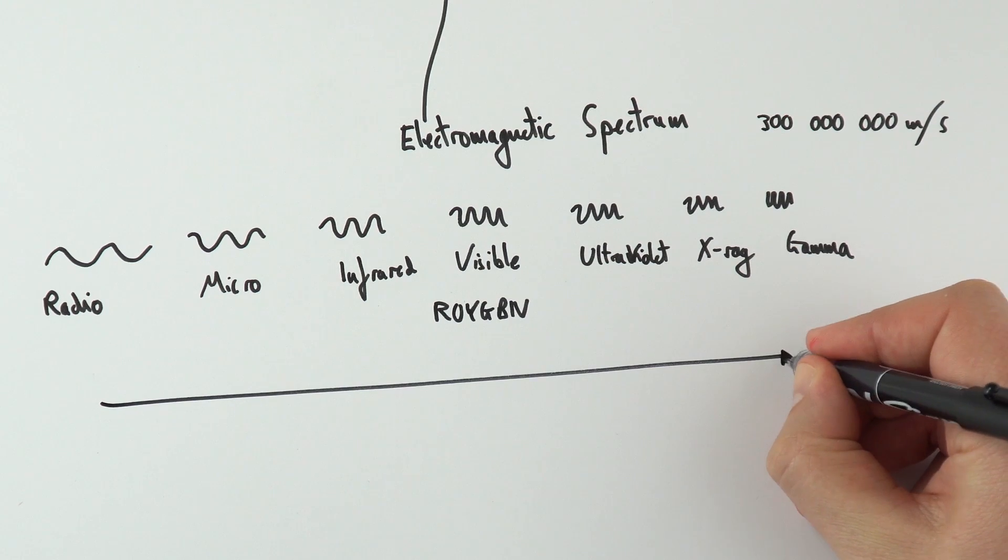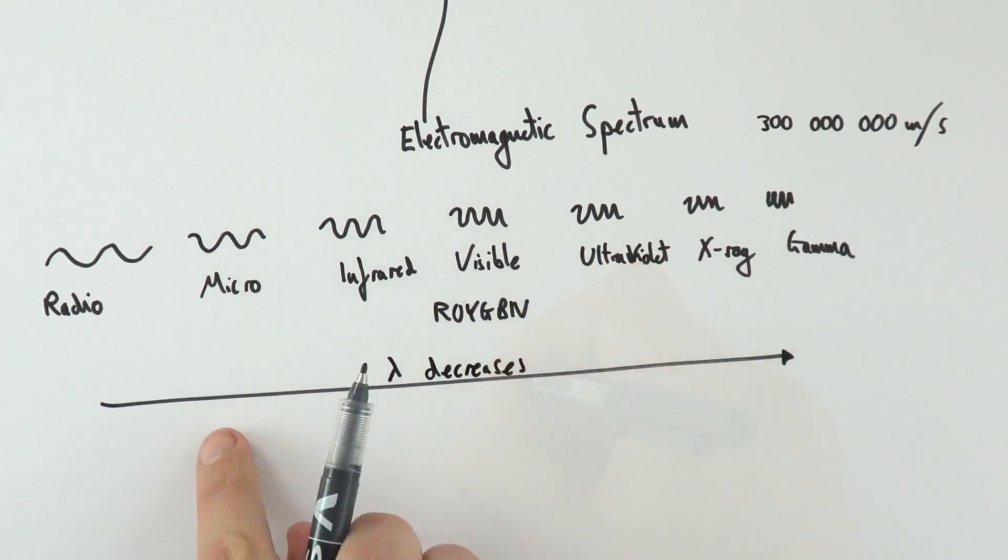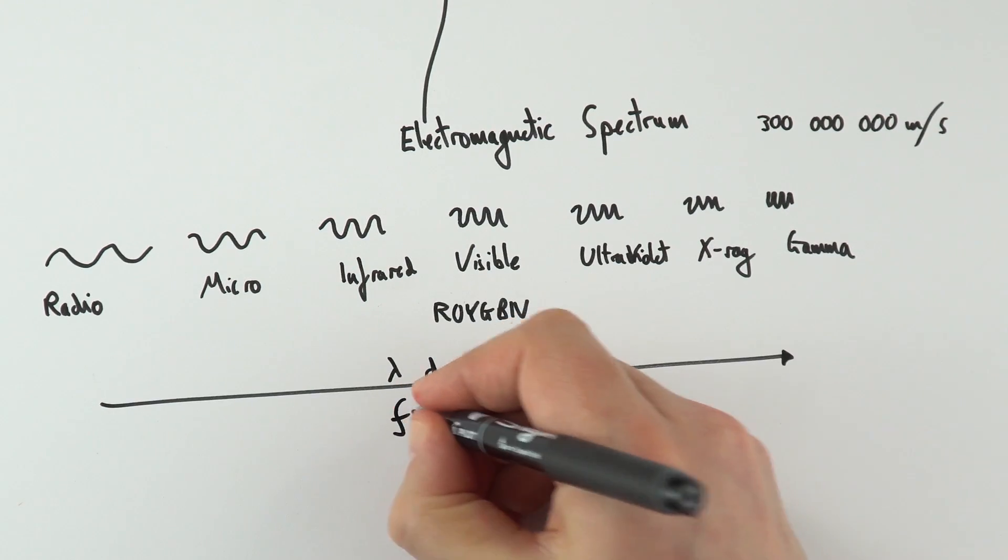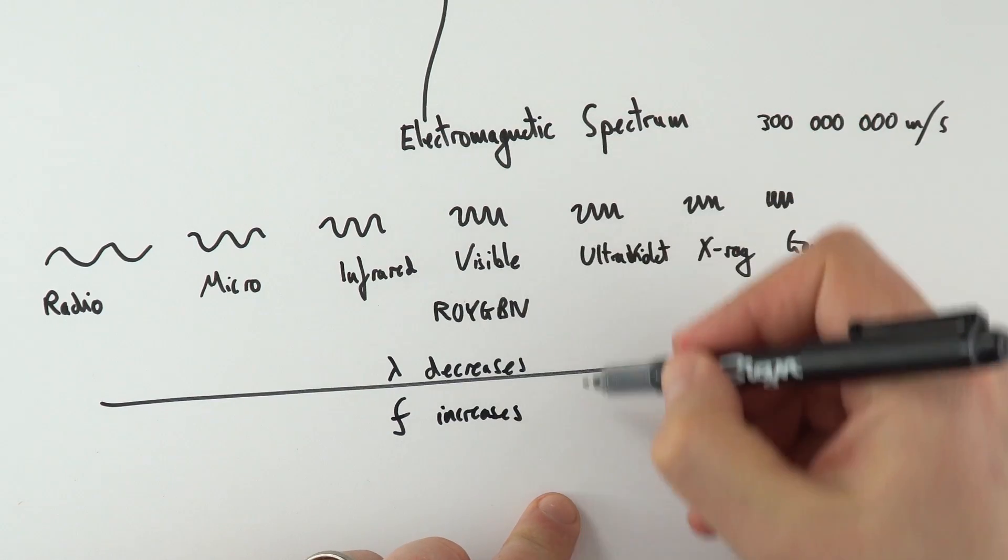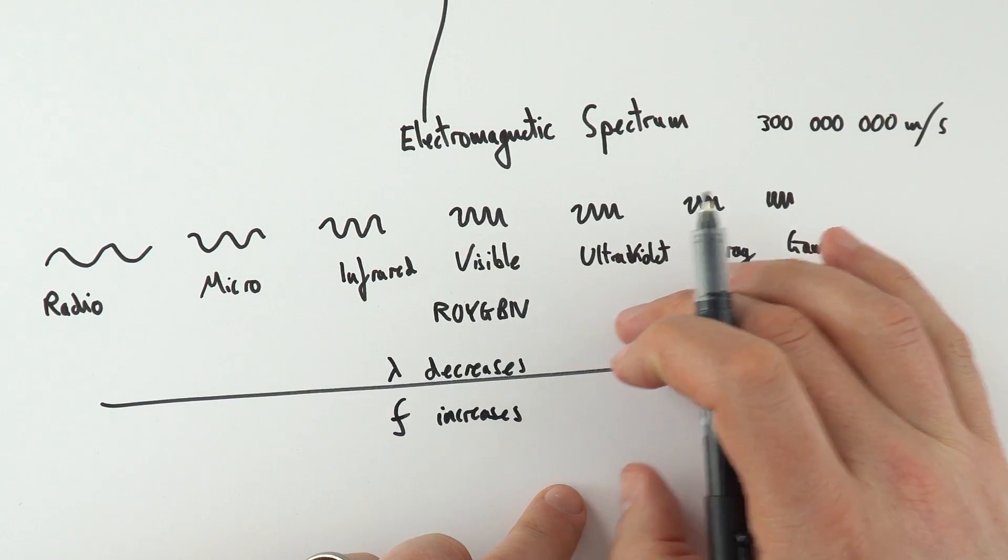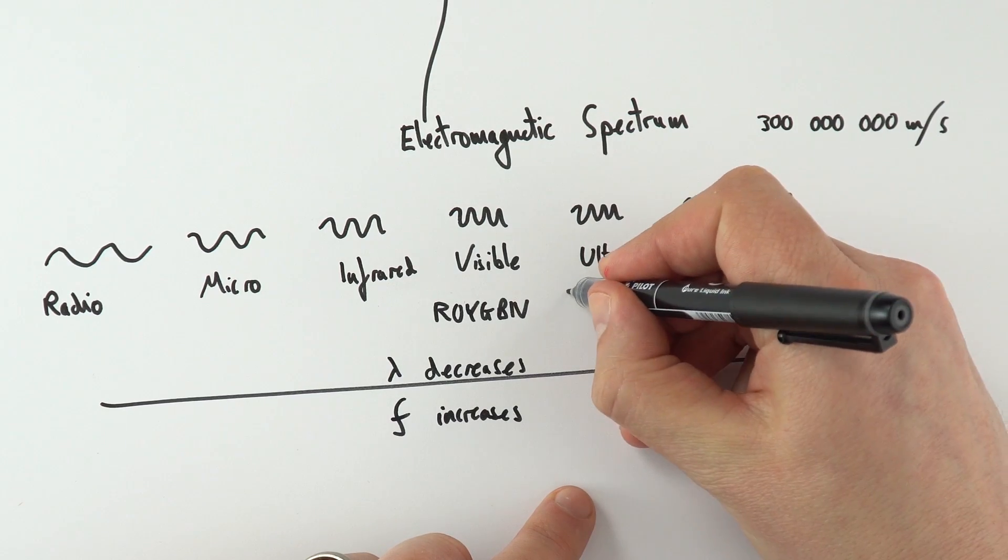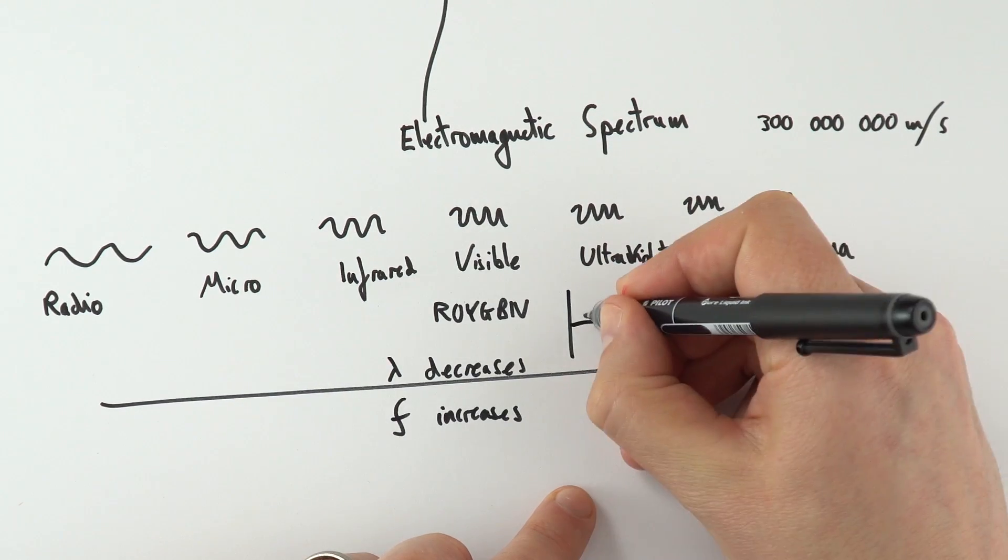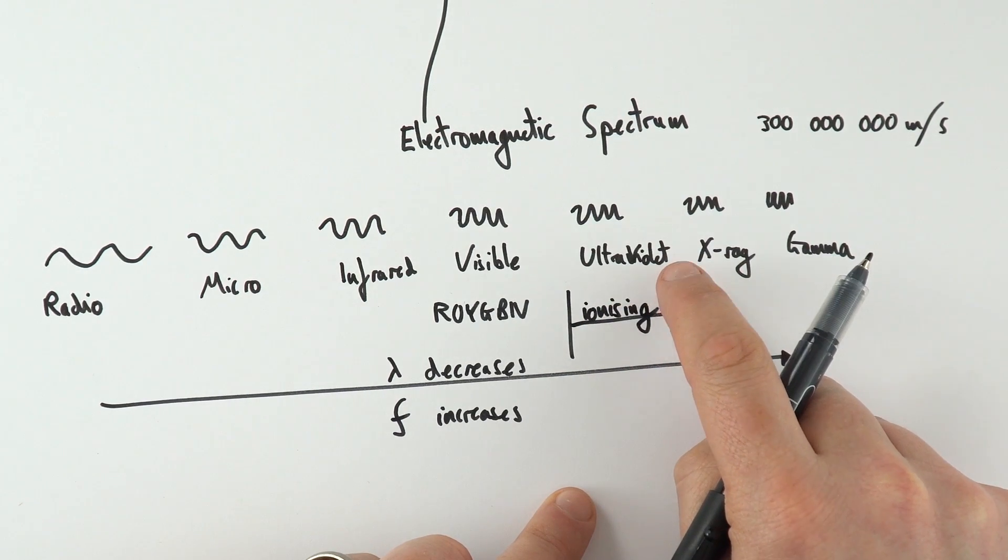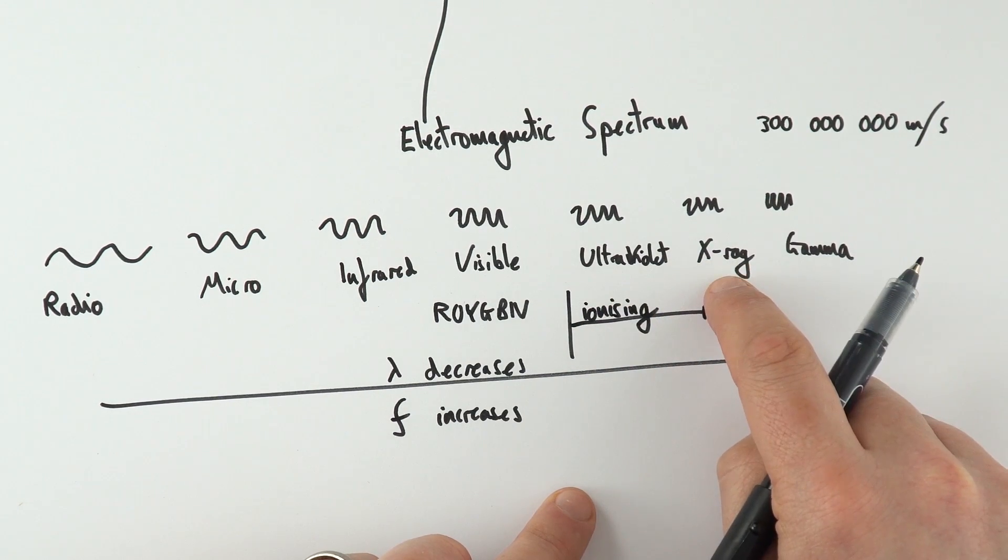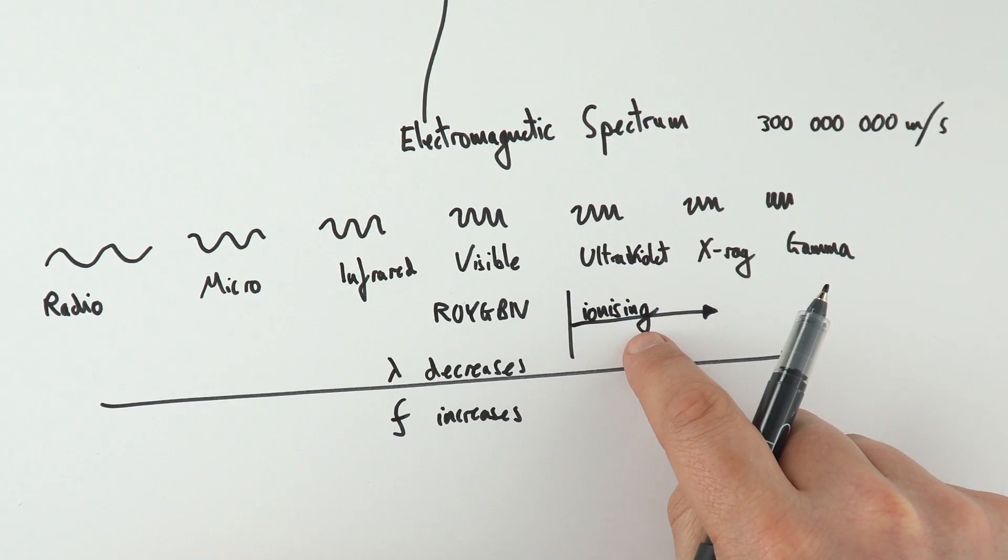As we go this way through the spectrum, the wavelength lambda decreases. But also, as we go along this way, the frequency increases. When you have higher frequency electromagnetic waves, they're going to be more dangerous. We can say they're more ionizing. From this point onwards, what we have is ionizing waves. That means ultraviolet isn't great for you, x-rays are worse, and gamma is worst of all. As you have a higher frequency, the waves become more dangerous.